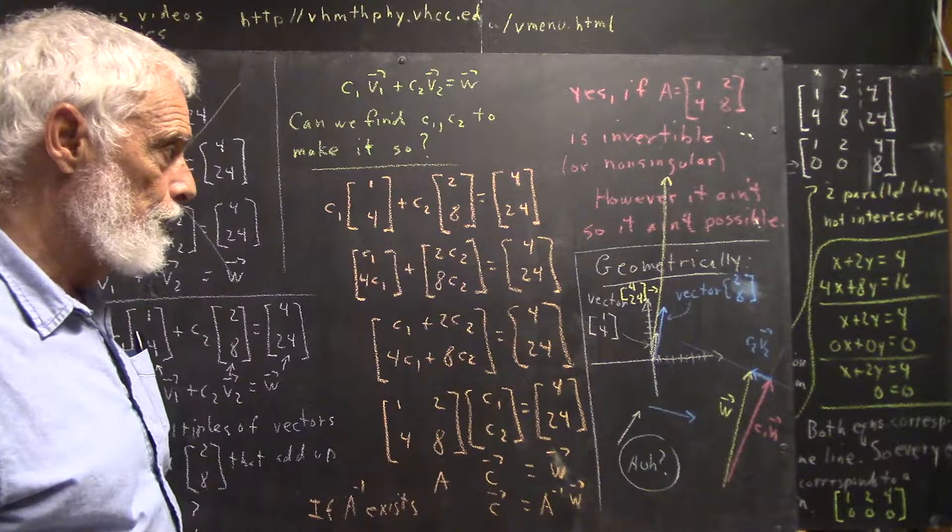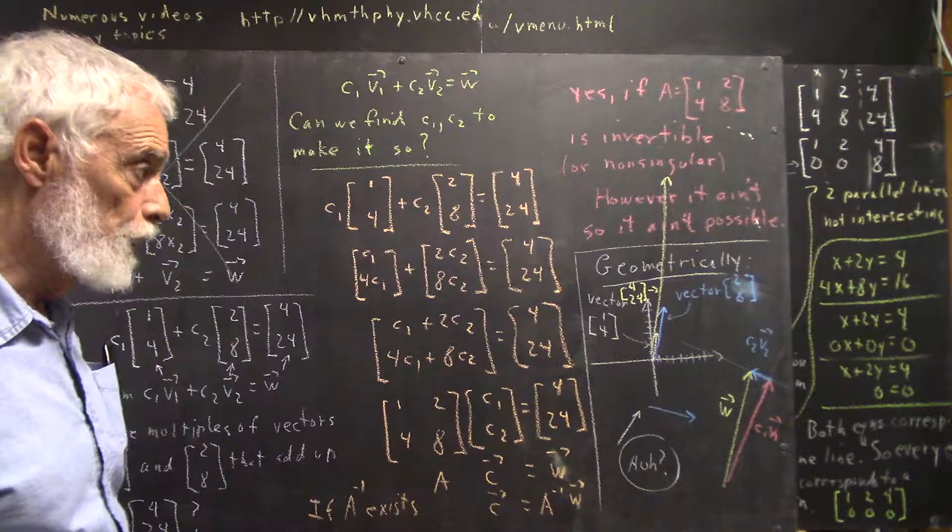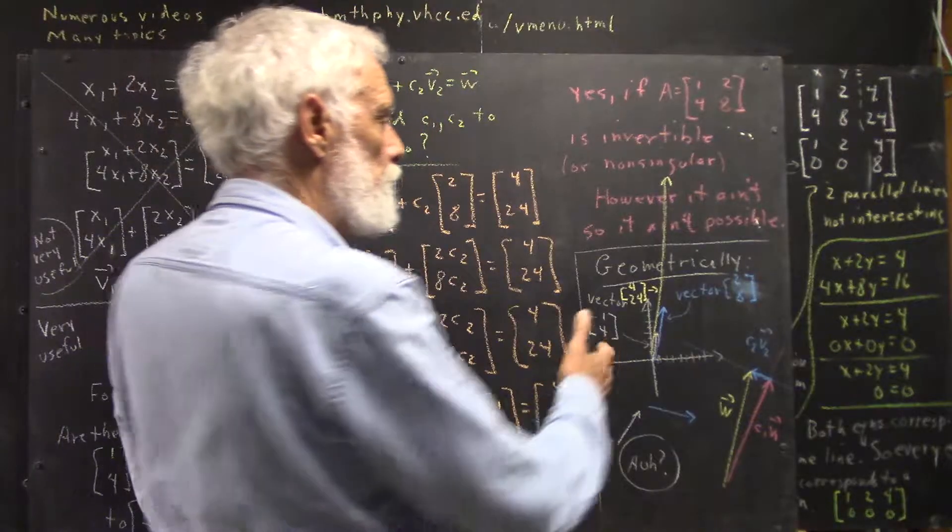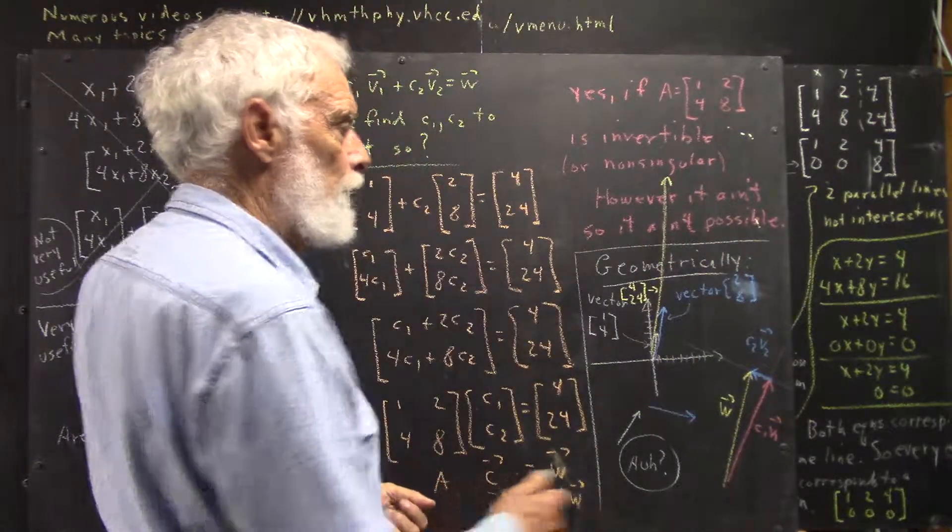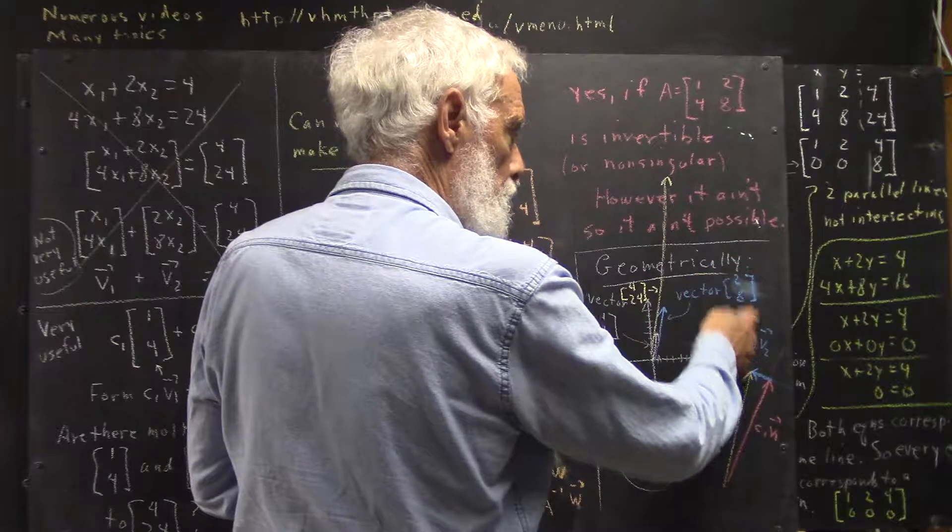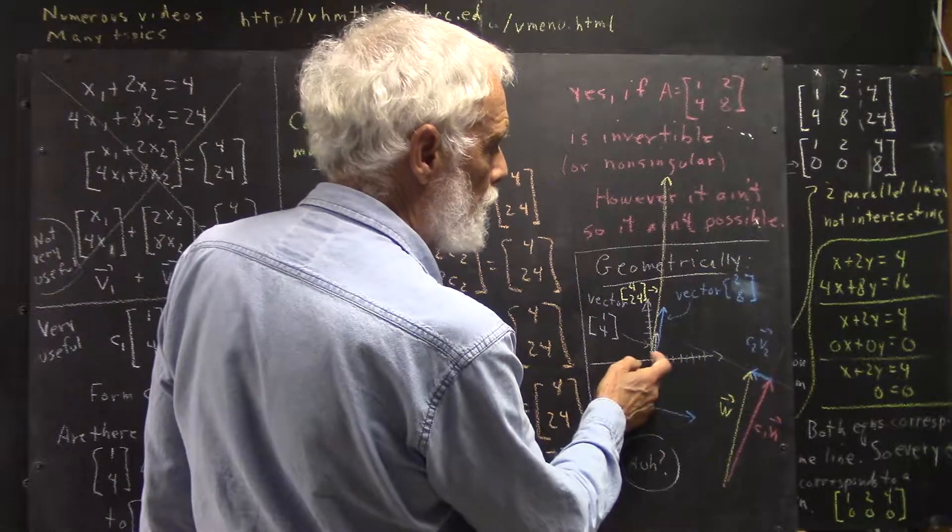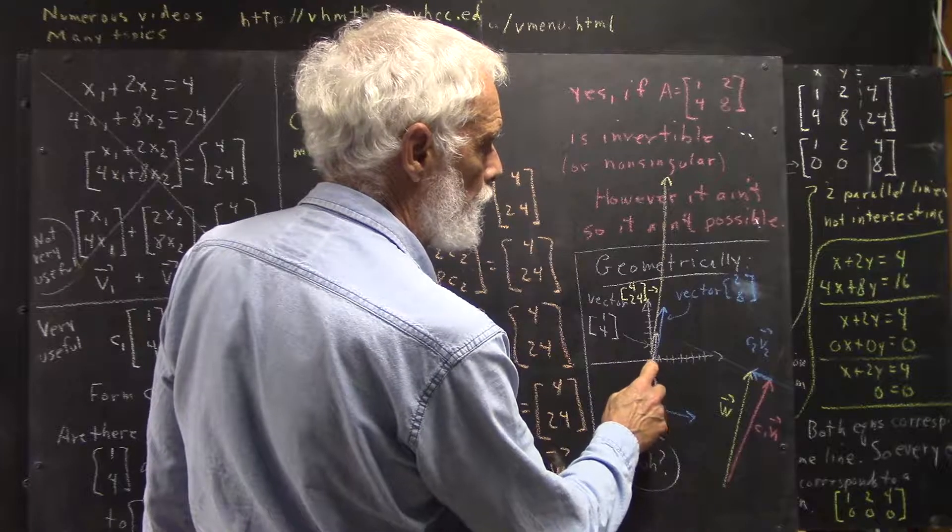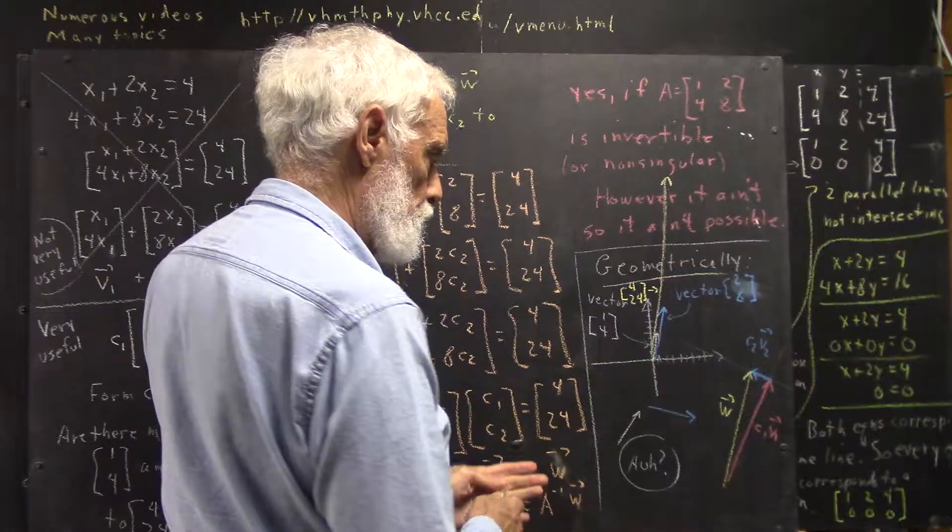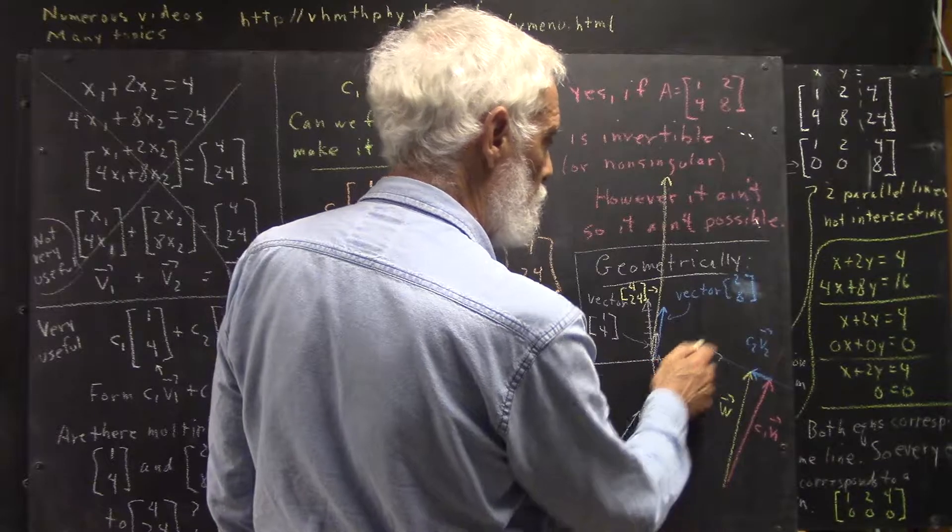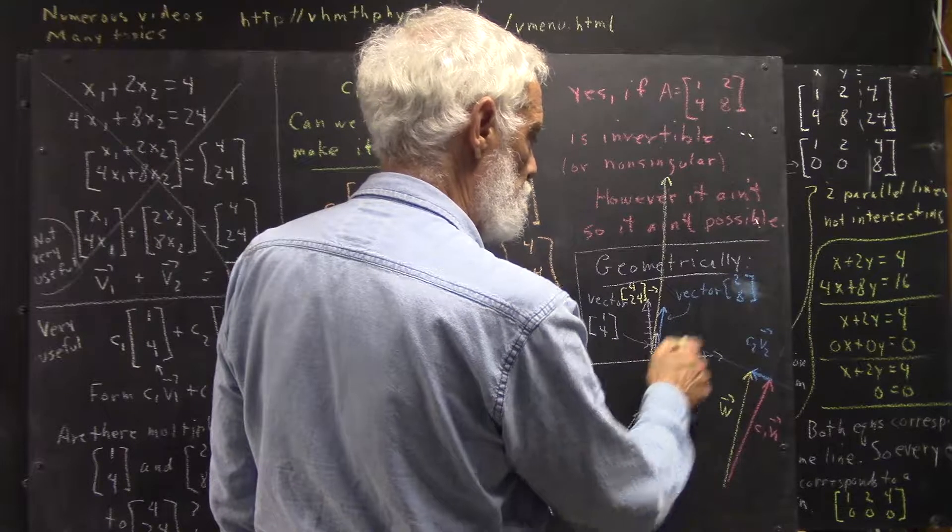Now we talked a little bit about the geometric picture. These vectors can be represented by arrows. The vector column vector [2,8] is represented by a vector that could be originating at the origin. We let the vector originate at the origin and we move over two units, corresponding to the 2 here, and then we move up eight units, corresponding to the 8.